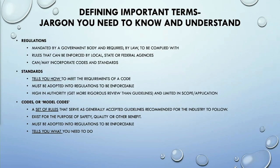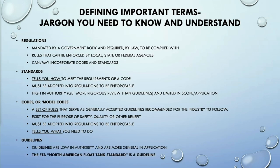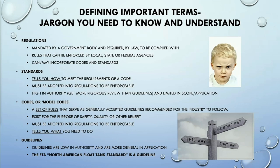Codes, or model codes specifically, are usually a set of rules that tell you what you need to do. They are also not enforceable unless adopted by regulation. I should warn you that 'codes' is often interchangeable with 'regulation' unless it's specified as a model code. Guidelines are typically the lowest in the tier of authority — usually pretty broad. An example is the North American Float Tank Standard, which is called a standard, so yes, the terminology is confusing. The entire water treatment industry works this way.